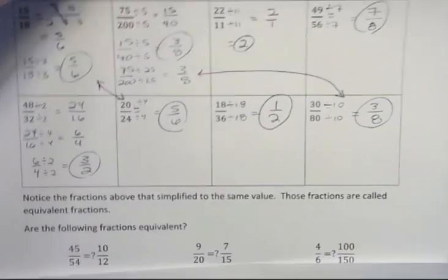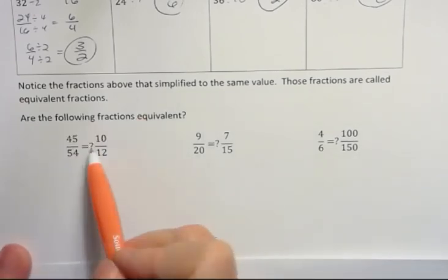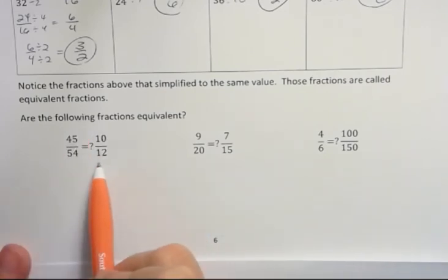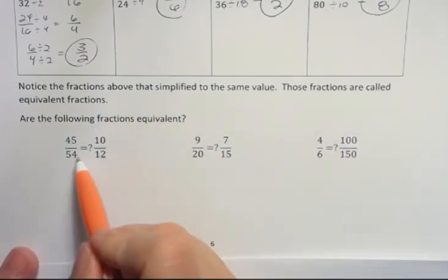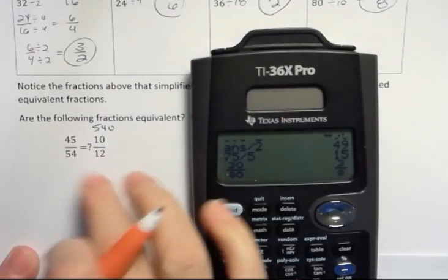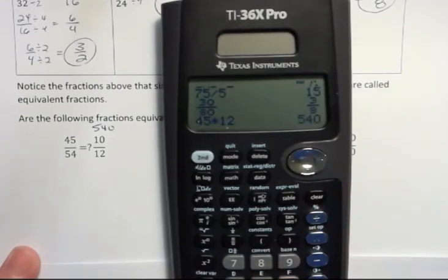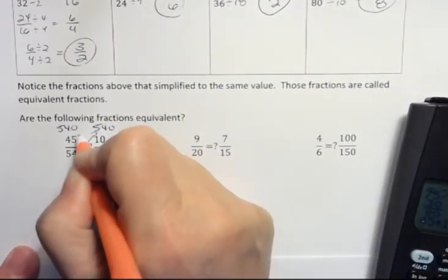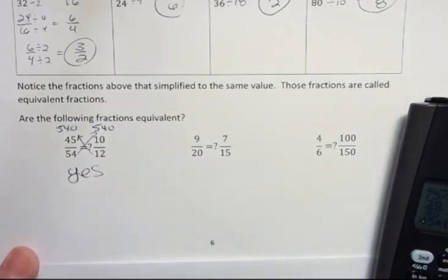So we can check to see whether fractions are equivalent by doing a quick cross multiplication. If these are equivalent, I have a little question here because I'm saying, are they equal to each other? One thing you can do is reduce them both to lowest terms and see. But another quicker way is just to cross multiply and see. So I'm going to do 54 times 10, which is 540. And then 45 times 12. 45 times 12 I can't do in my head, so I'm going to do it in the calculator. But that's also 540. Since I got the same product going this way and this way, remember product is a multiplication answer, then yes, those two are equivalent.